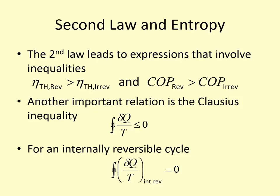When we talked about the second law, we noticed there were expressions that were inequalities. When we looked at reversible versus irreversible systems, we found that thermal efficiency or the coefficient of performance is always going to be greater for a reversible system than for an irreversible system. Entropy kind of explains why, and these inequalities will allow us to better understand entropy and its role in energy transfer.